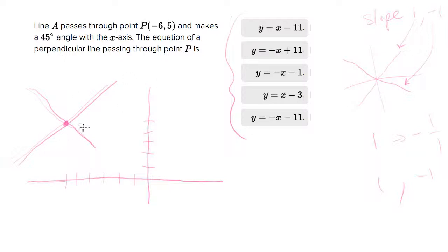So the first line, let's do the positive sloping one. If it has a slope, it's a 45 degree angle. That means it has a slope of 1. I just know that. But if you want to prove it, go over 1 and up 1, that's a 45 degree angle. Rise over run, 1 over 1 is 1.